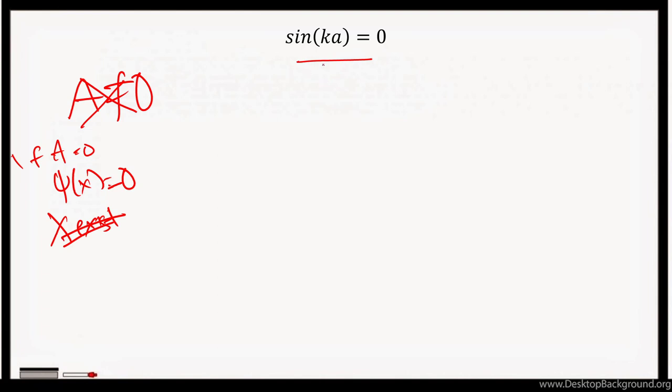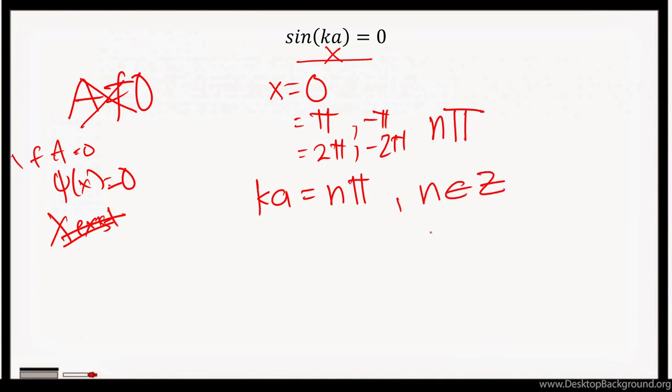And for sine to be 0, the argument inside should be equal to 0, equal to π, or equal to 2π, or -π, -2π, or basically an integral value of π. This would mean that for sin(ka) to be equal to 0, ka should be equal to nπ, where n is any integer.